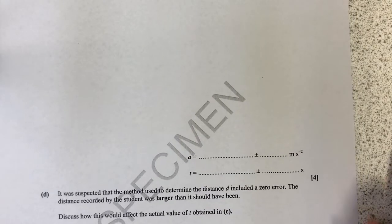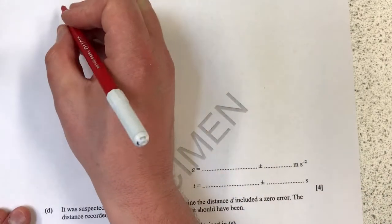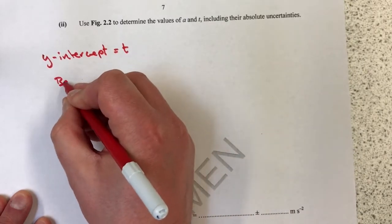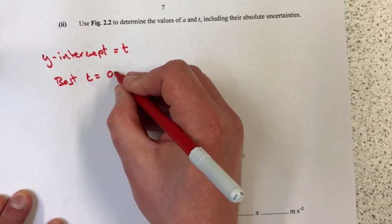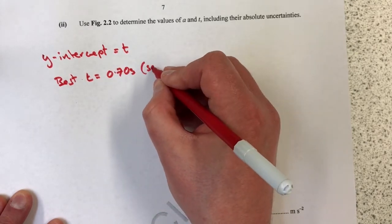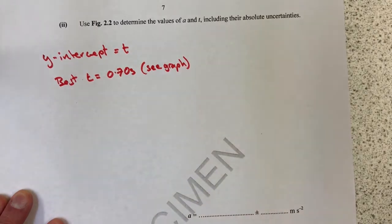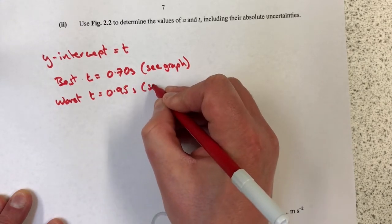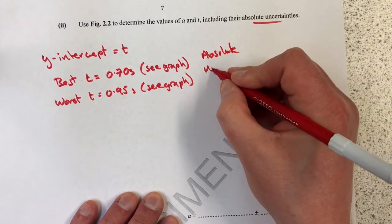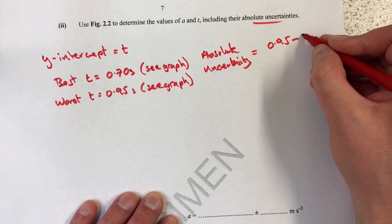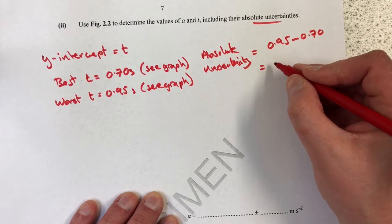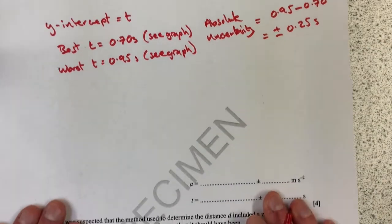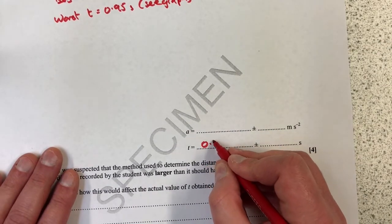So use figure 2.2 to determine values for a and t. So let's do t first. So my y-intercept equals t, and my best y-intercept t equals 0.70 seconds, and then I'll just put brackets 'c graph' obliged to. Then check that out, my worst value for t was 0.95 seconds 'c graph', and therefore my absolute uncertainty 0.95 minus 0.70, 0.70, which will be plus or minus 0.25 seconds. So down here my best value for t is 0.70 plus or minus 0.25.